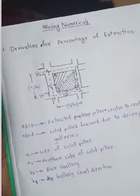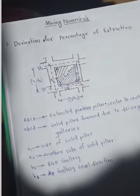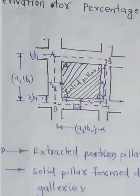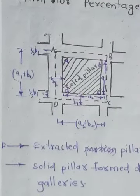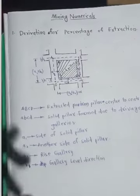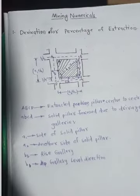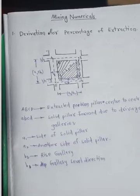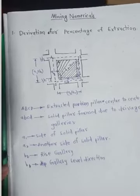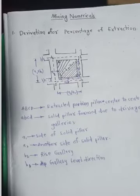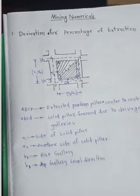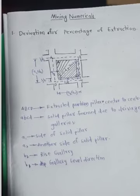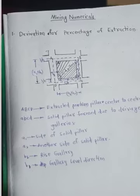From the figure you can see that the area ABCD is known as the extracted area, which is the center-to-center distance of the extracted pillar. The smaller ABCD represents the solid pillar formed due to the image of galleries.